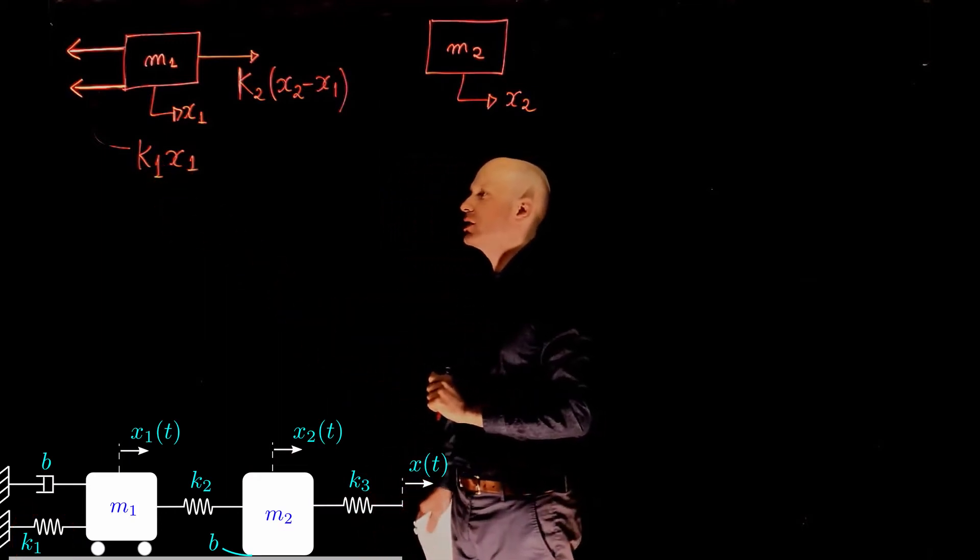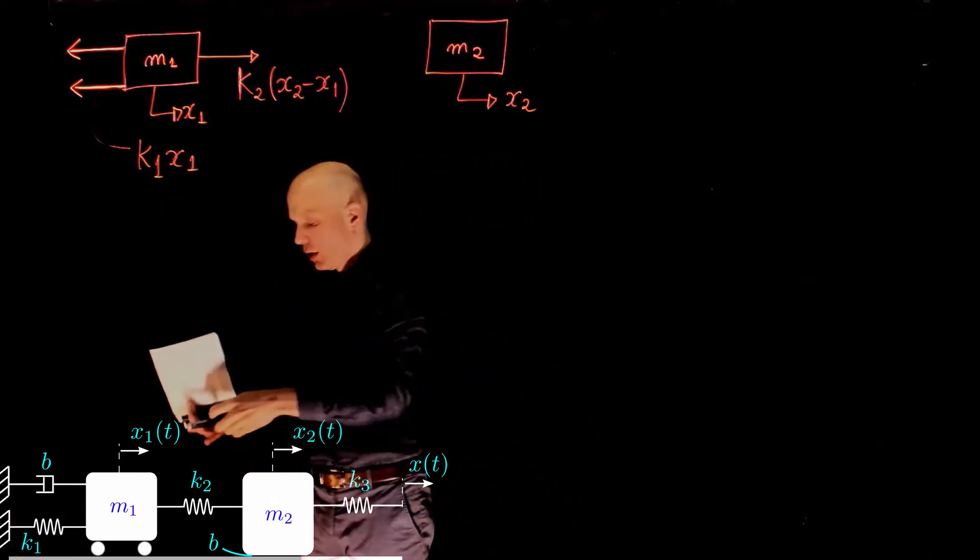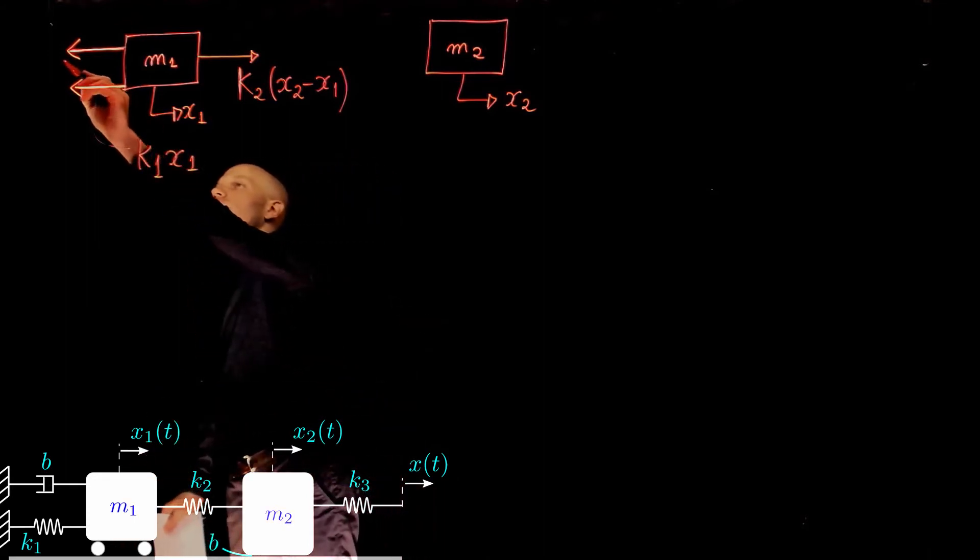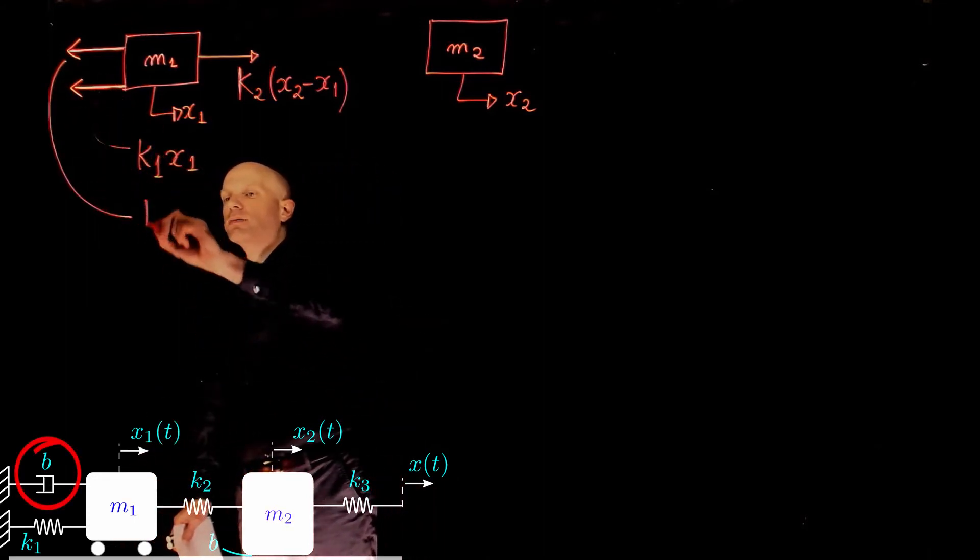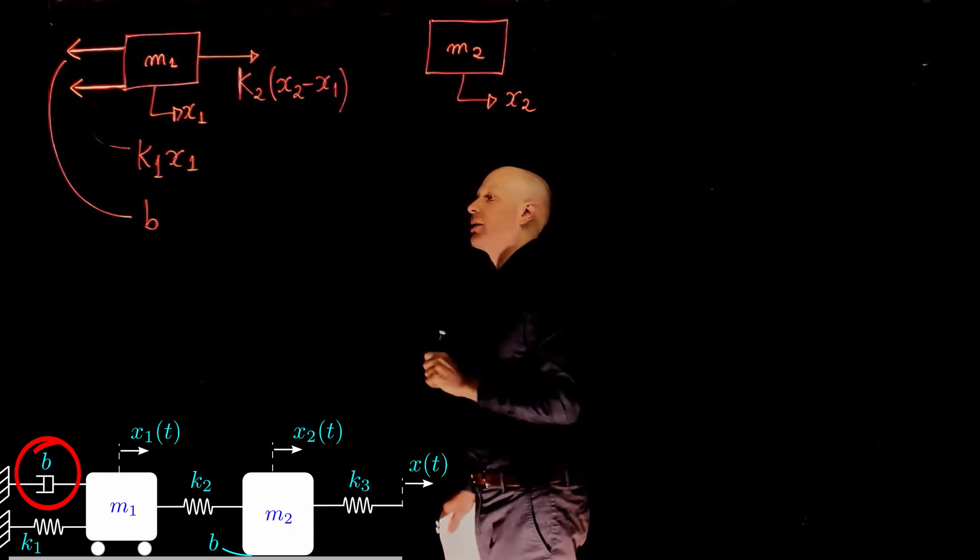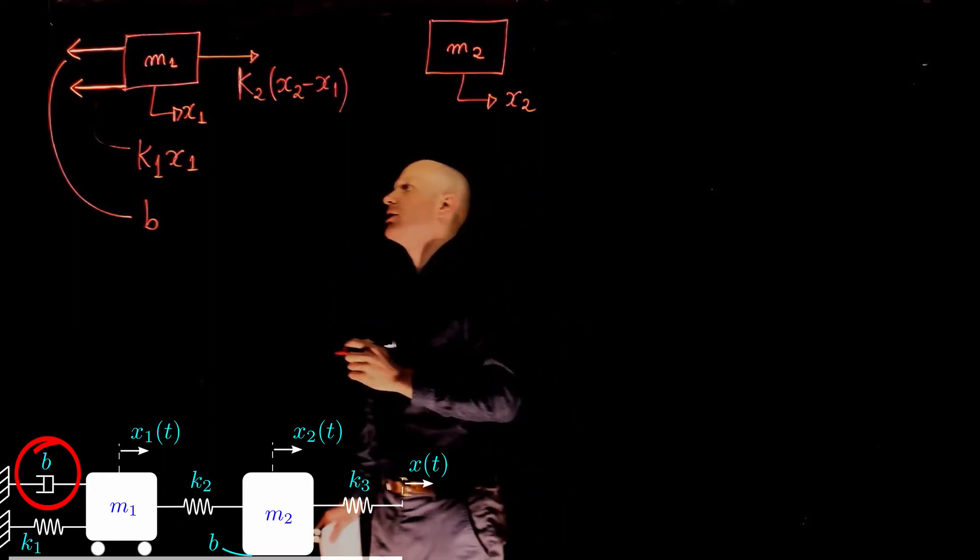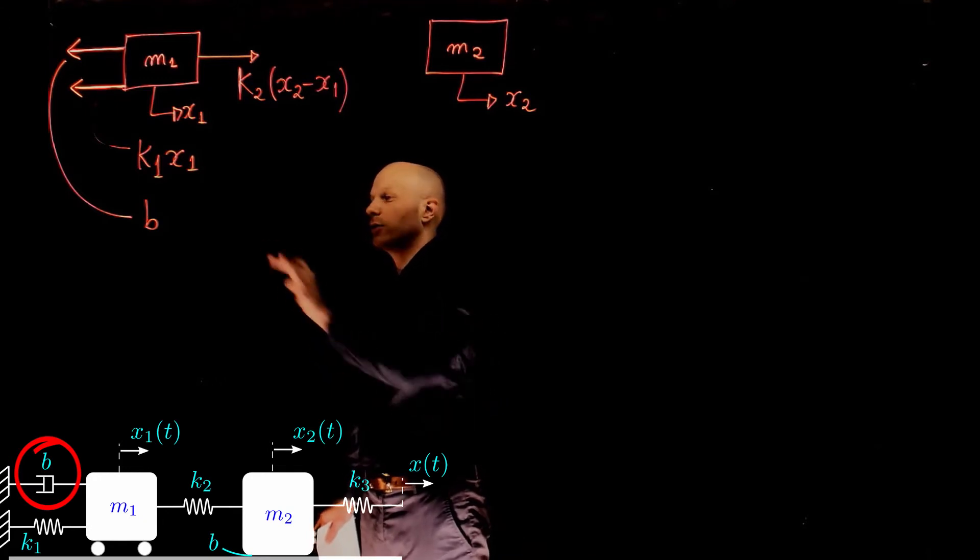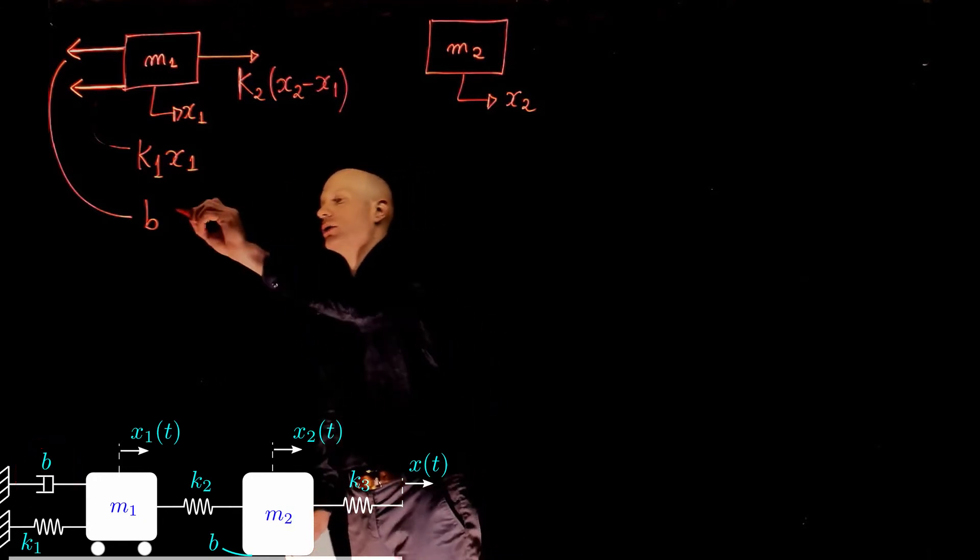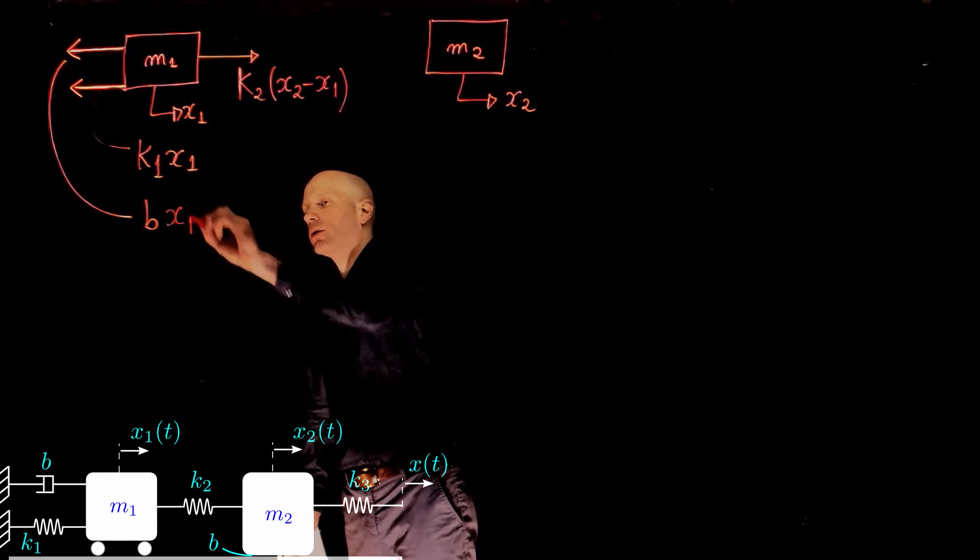And the force due to the damper is simply the coefficient of viscous friction of that damper b, times the velocity or the speed of the displacement of mass m1, that is x1 dot.